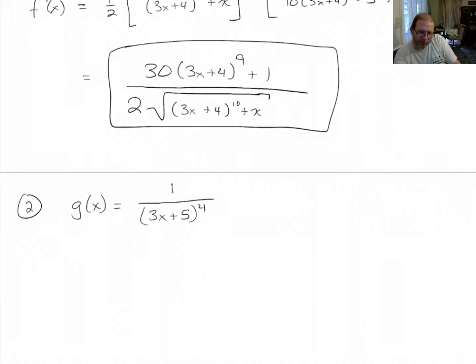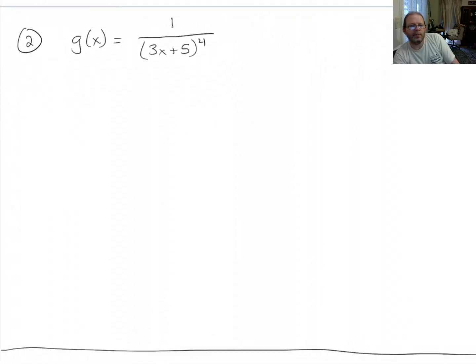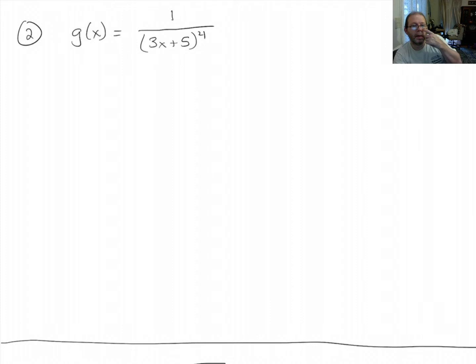Alright, this next problem. There are two logical ways to do this thing. A lot of people look at this and they instantly say oh this is a quotient rule problem. You can do it with the quotient rule. There's nothing wrong with that. But I want to do it with the quotient rule and then without the quotient rule. We'll get the same answer but one method is nicer than the other. Alright, so quotient rule.